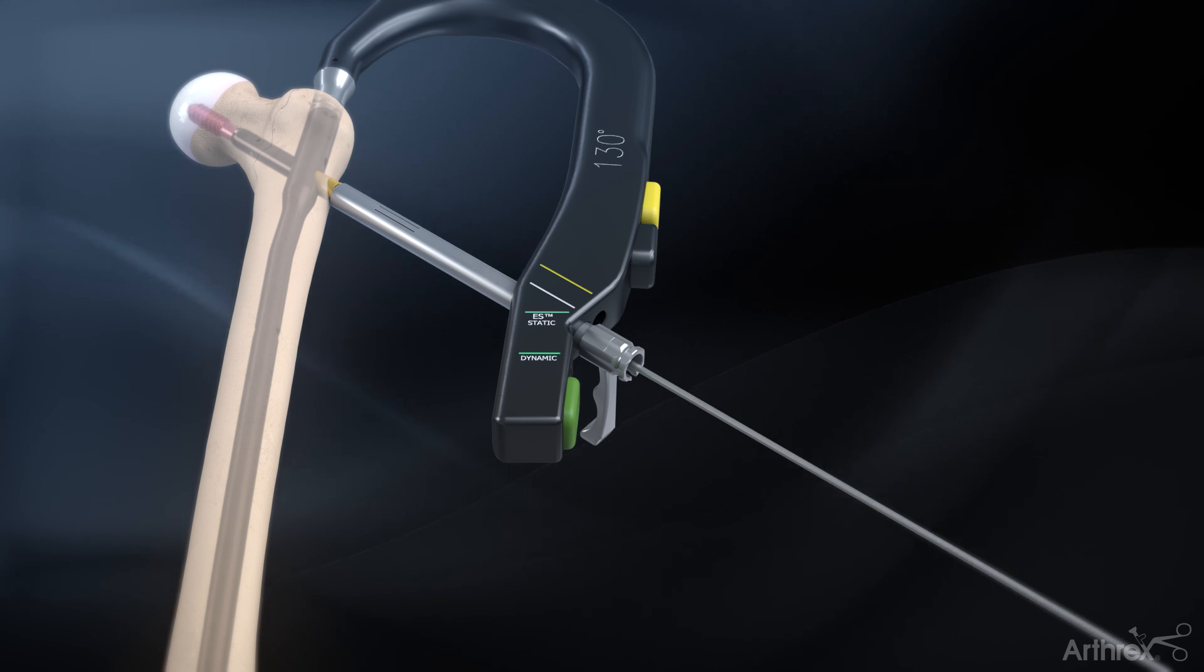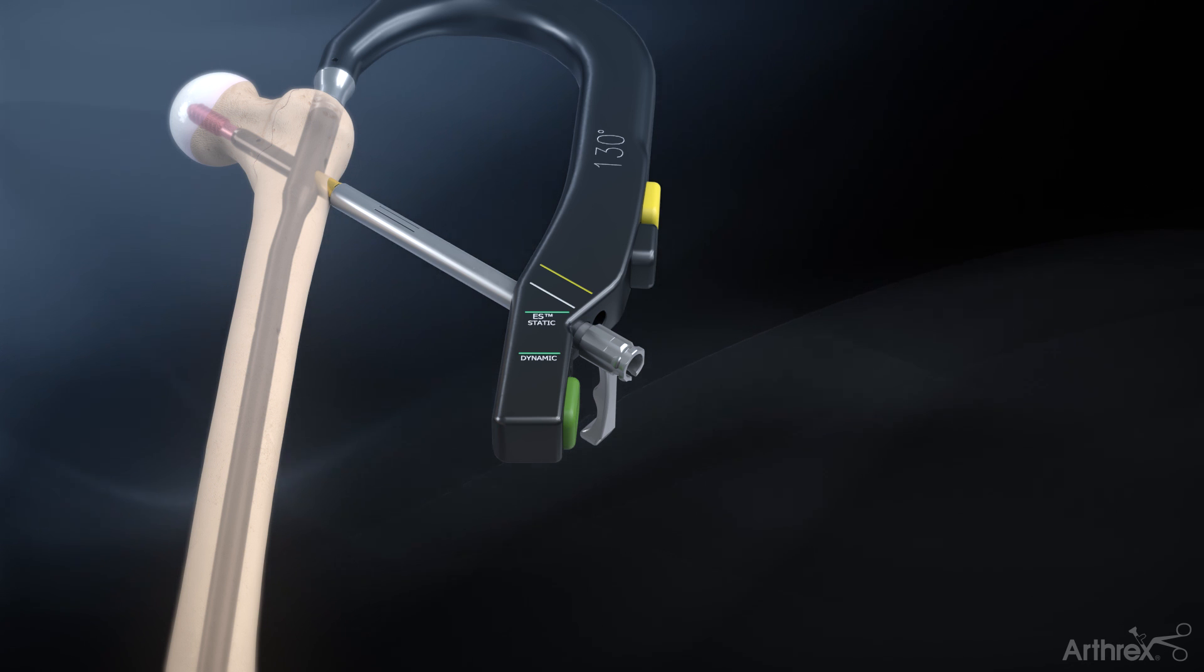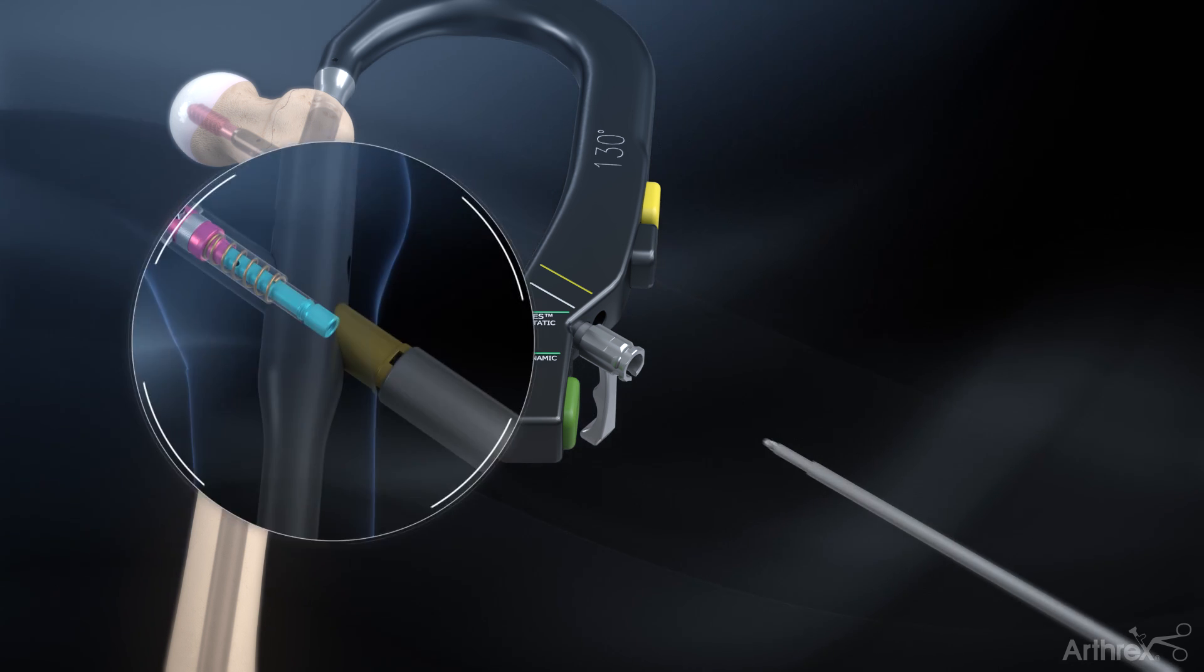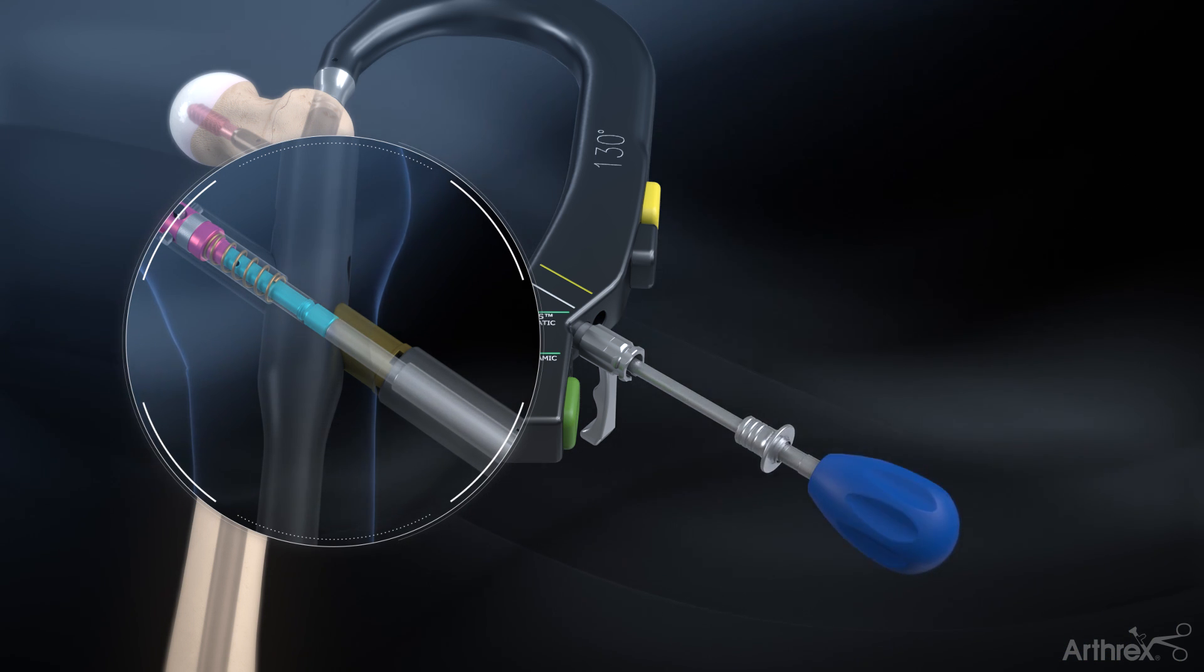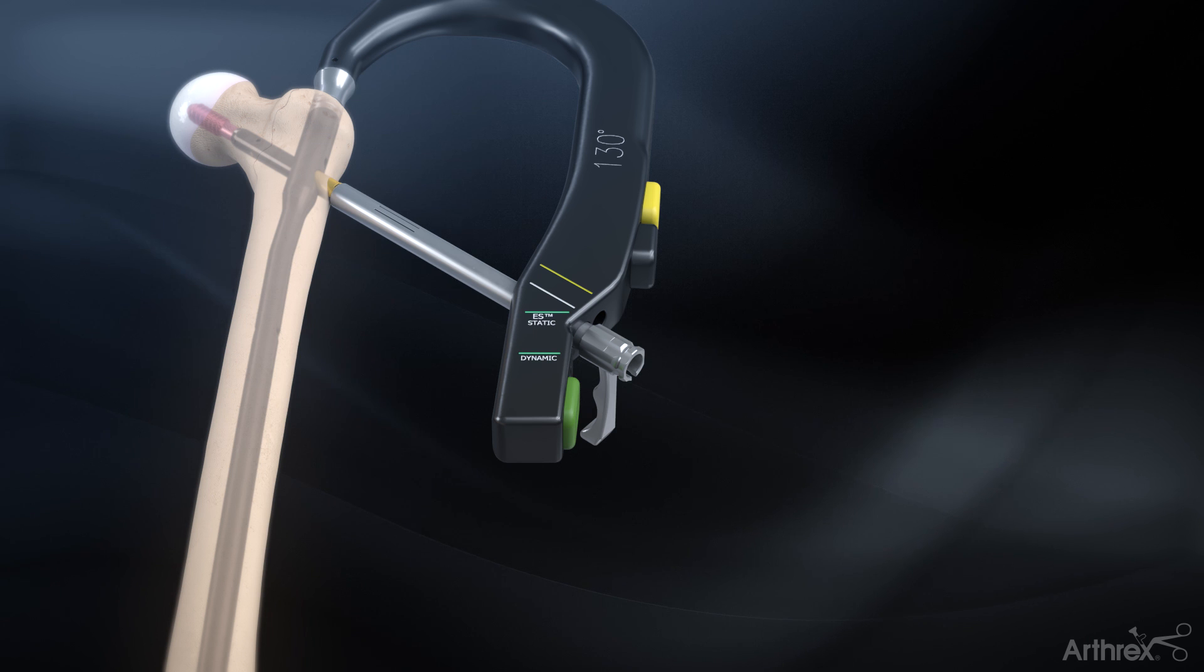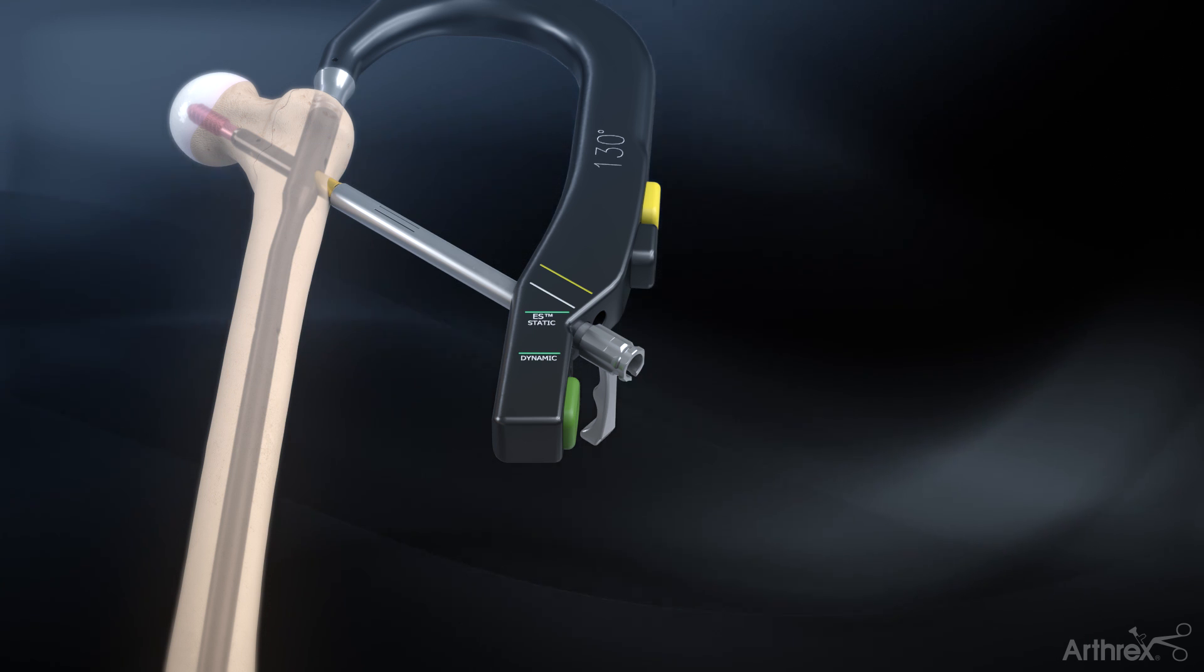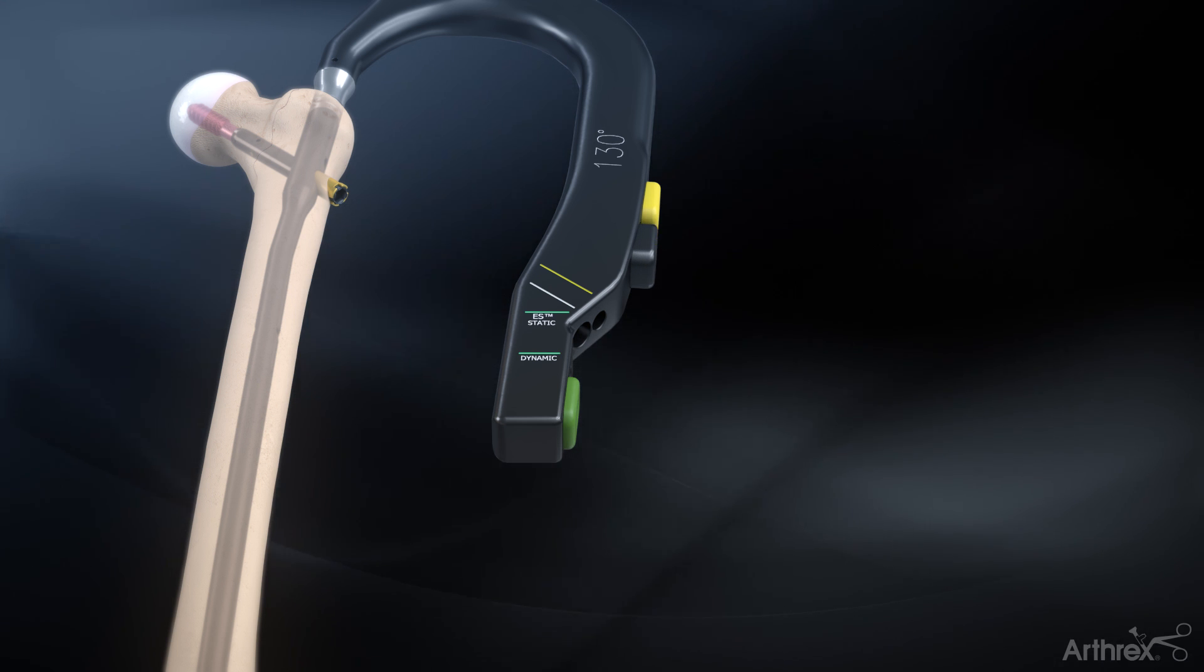The lag screw guide pin is also removed. To allow postoperative compression in the telescoping lag screw, remove the activation sleeve by inserting the activation tool through the sheath into the lag screw and turning counterclockwise. The activation sleeve will retain the tip of the activation tool once disengaged from the lag screw. Remove the lag screw sheath to complete the lag screw insertion.